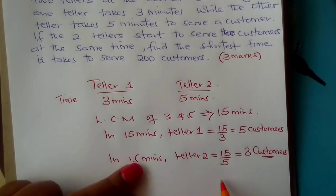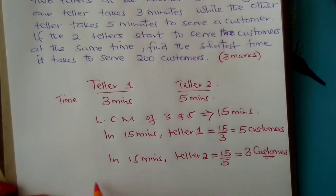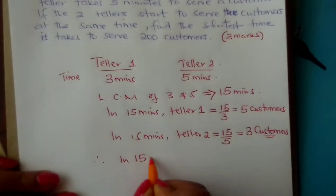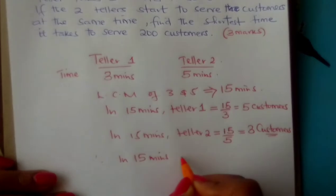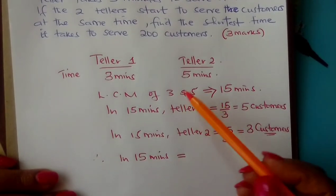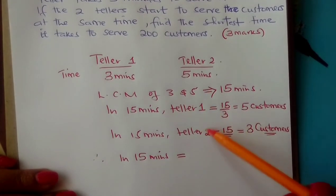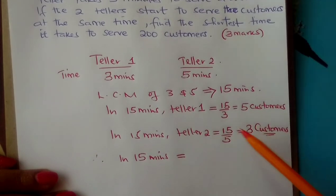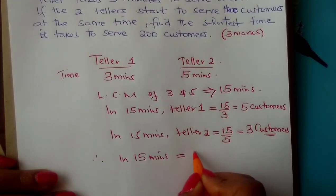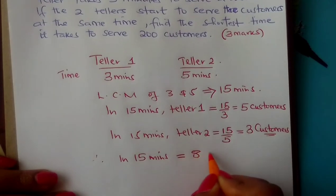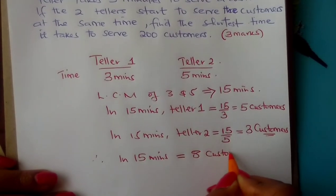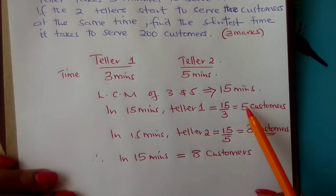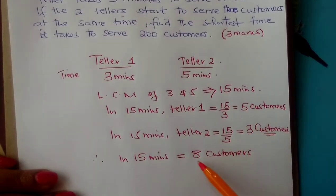So we have considered the same duration — 15 minutes. Therefore, in 15 minutes, both tellers will serve how many customers? Five plus three, so in 15 minutes they will serve eight customers.